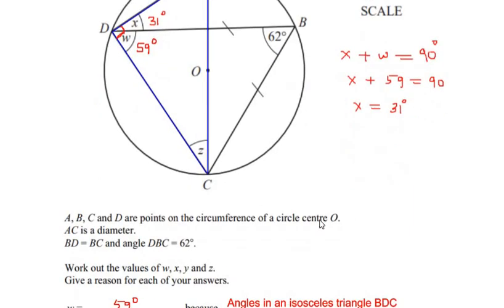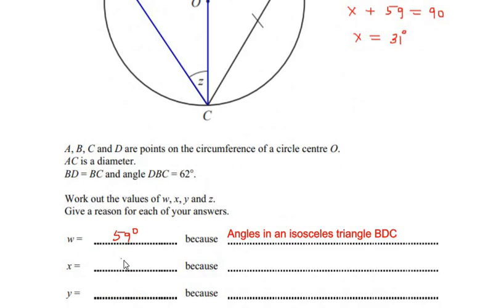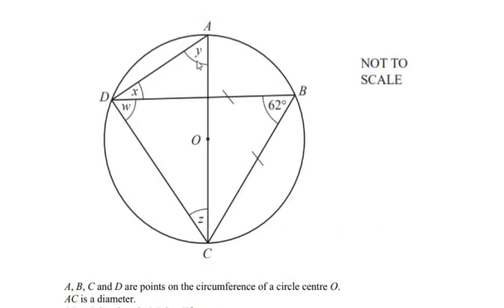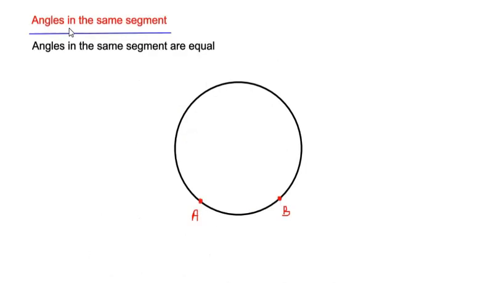So angle X = 31 degrees, and the reason is: the angle made by a diameter in a semicircle is 90 degrees. Now let us find angle Y, using the angles in the same segment theorem, which states that angles in the same segment are equal.